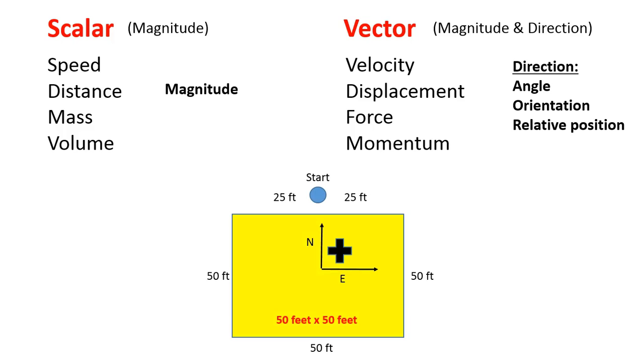So let's look at an example here. So let's say you have a person here that's going to travel around an object. And this object is 50 feet by 50 feet, so a square object. And I want you to note that we actually do have an orientation or a coordinate system here. So, this direction going up is north, and going to the right is east. And both of those are being signified as positive directions. So, that person travels, and they make a complete path around the object. So, what was their distance, and what was their displacement?